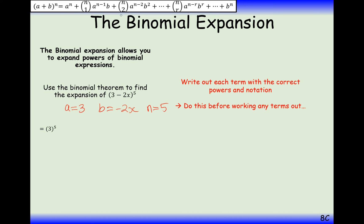Substituting in: the first term is 3 to the power of 5, then we add 5 choose 1 with the power on the 3 decreasing and the power on the minus 2x increasing. Filling in the rest, you can see the powers on the 3s are decreasing, the powers on the minus 2x are increasing, and the choose functions are increasing as well.